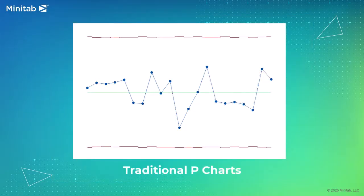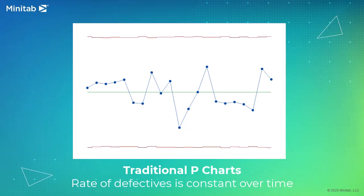Traditional P-Charts assume that your rate of defectives is constant over time. However, sometimes external noise factors that are not special causes may affect the rate of defectives.